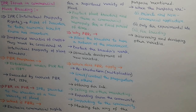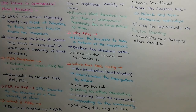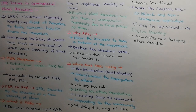When do PBRs apply? They apply during reproduction or multiplication, to limit or control the propagation by others, during offering for sale, during selling or other marketing, during exporting from the community, during importing to the community, and during stocking for any of the purposes mentioned. Exceptions include private and non-commercial application, use only for experimental purposes, for breeding, and during discovering and developing other varieties.